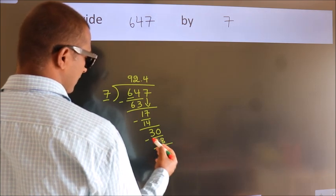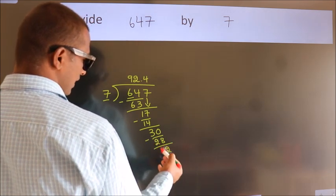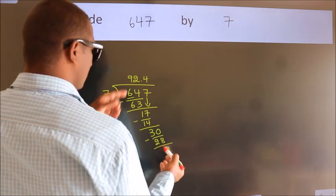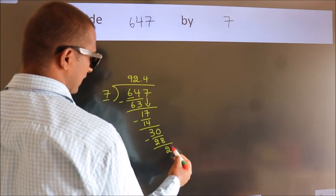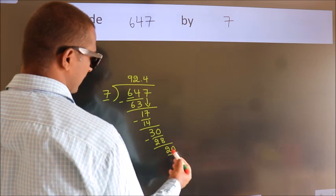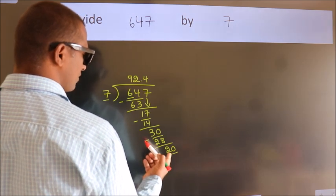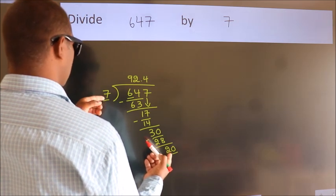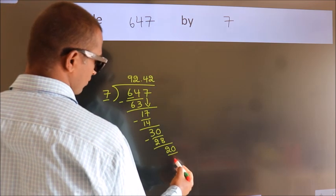Now we subtract. We get 2. After this, we already have the decimal. So directly take 0. So, 20. A number close to 20 in the 7 times table is 7 twos, 14.